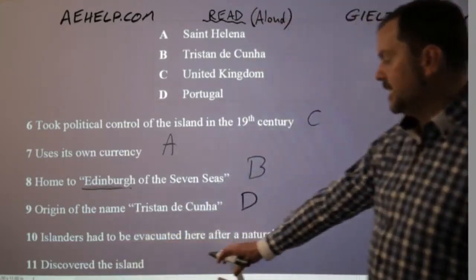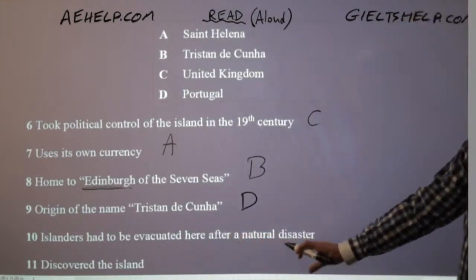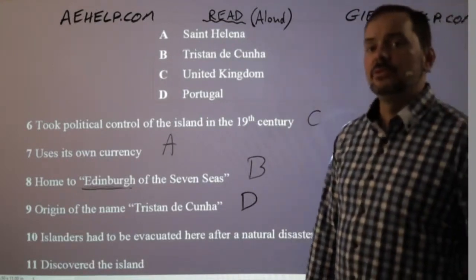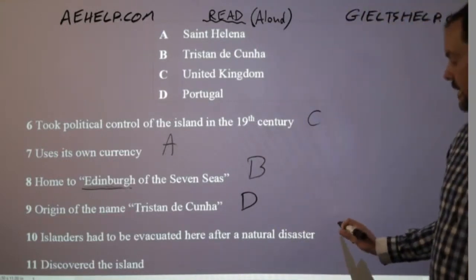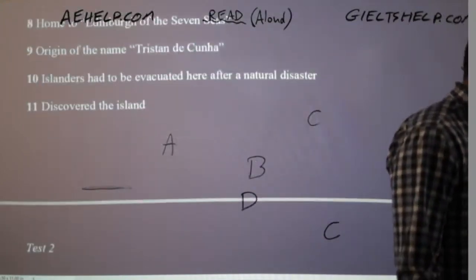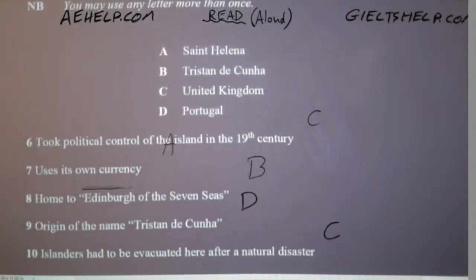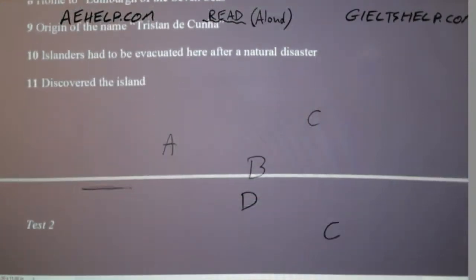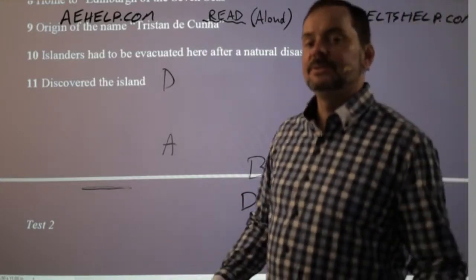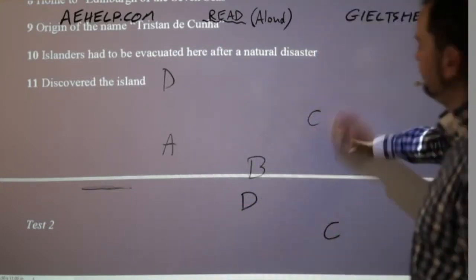Question 10: 'islanders had to be evacuated here after a natural disaster.' The natural disaster was the volcano erupting. They were evacuated to England — so the answer is United Kingdom. Question 11: 'discovered the island.' That was Portugal. A Portuguese captain, Tristão da Cunha, discovered the island in 1506, and that's where the island got its name.